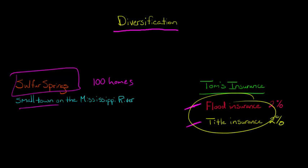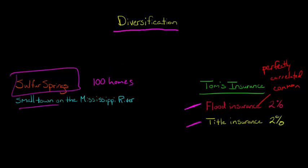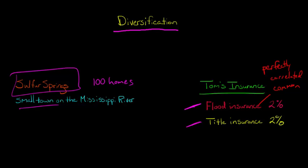These two types of risks are different in that flood insurance is a common risk. When we say that something is a common risk, what we mean is that it's perfectly correlated. You have one home here, but there are 99 other homes in Sulphur Springs, and let's assume Tom's Insurance has insured all 100 homes. The risk of a loss due to flood is basically perfectly correlated, because if you have flood damage, probably the other 99 homes do as well.